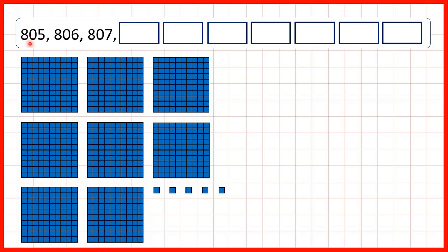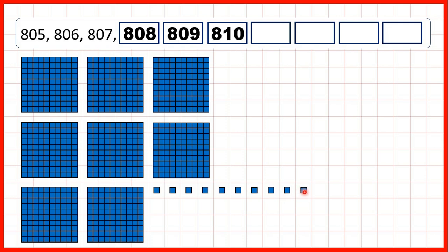Now, we start with 805. So that's 8 hundreds and 5 ones. Next, 806, 807, 808, 809, 810. Because we can exchange these 10 ones for 1 ten.